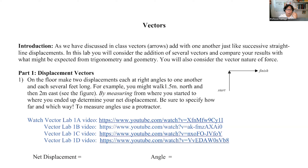In an in-person class, you would actually be walking on the classroom floor, making marks. So let's say you walk 1.5 meters north from the starting point, then you walk two meters to the east.